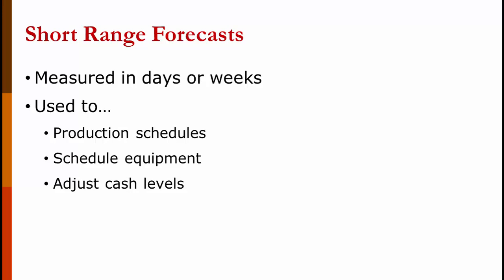At most companies, short range forecasts are measured in days or weeks. Georgia Power's was five years, but for most companies, days or weeks. These are used for scheduling production, scheduling equipment, which jobs it's going to work on, adjusting cash levels, and scheduling your employees for their next weekly or monthly schedule if you don't have a standing schedule.